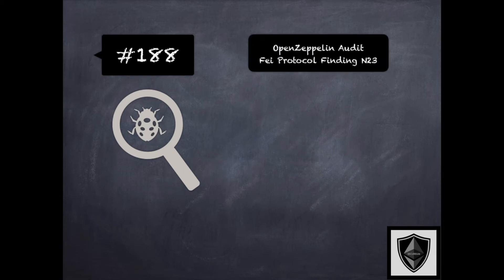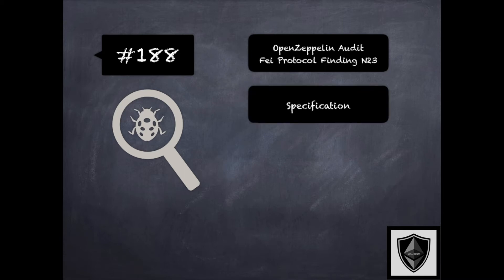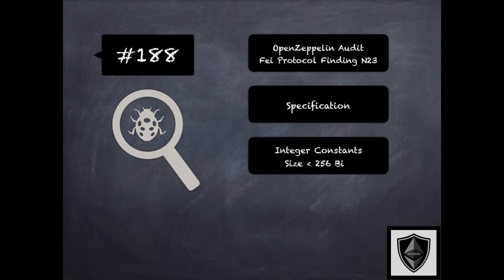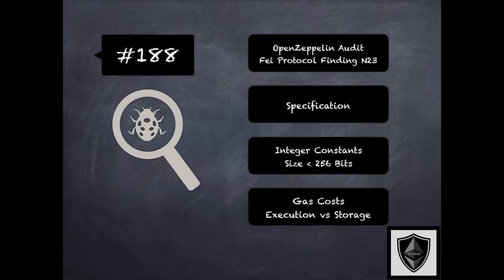Finding 188 is another finding from OpenZeppelin's audit of FAE protocol, where the concern was about the use of unnecessarily smaller sized integer variables. In Solidity, using integers smaller than 256 bits — the EVM word size — tends to increase gas costs because the EVM must perform additional operations to zero or mask out the remaining parts of storage slots for such integers. This can be justified by savings in storage costs in some scenarios, but that was not the case for this code base. The recommendation was to consider using integers of size 256 bits to improve gas efficiency. This is related to system specification in 136 and principle of economy of mechanism in 197 of the security pitfalls and best practices 201 module.